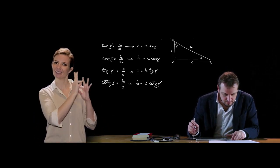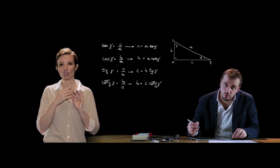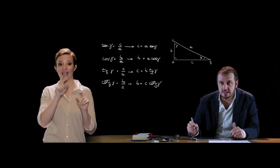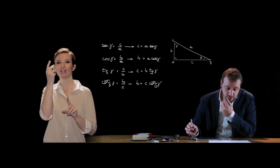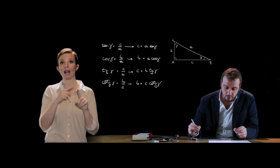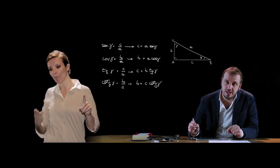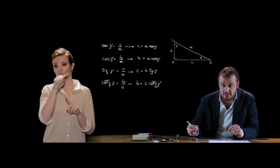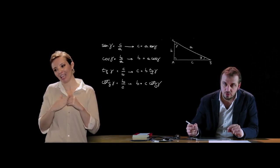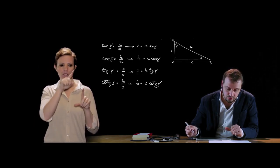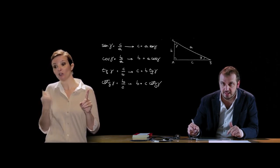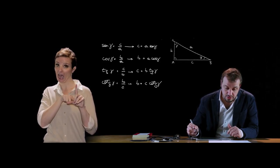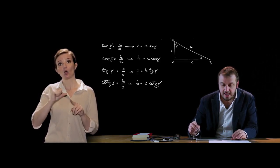Queste espressioni, che provengono dalle definizioni applicate agli angoli acuti β e γ, ci consentono di formulare i quattro teoremi principali sui triangoli rettangoli. Il primo: un cateto è uguale al prodotto dell'ipotenusa per il seno dell'angolo opposto al cateto stesso. Il secondo: un cateto è uguale al prodotto dell'ipotenusa per il coseno dell'angolo acuto adiacente. Il terzo: un cateto è uguale al prodotto dell'altro cateto per la tangente dell'angolo opposto. Il quarto: un cateto è uguale al prodotto dell'altro cateto per la cotangente dell'angolo acuto adiacente.